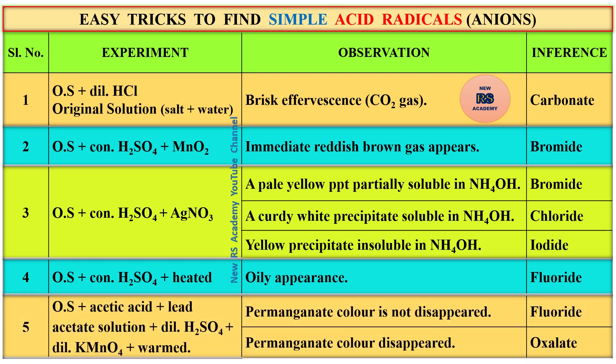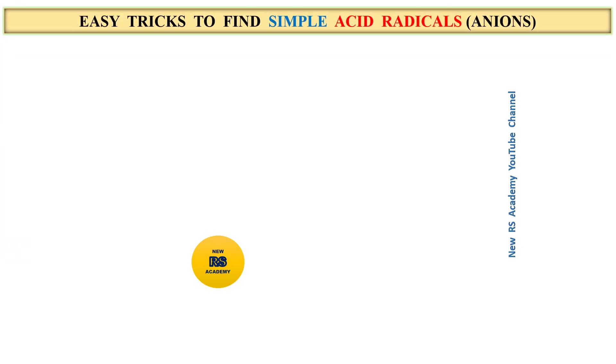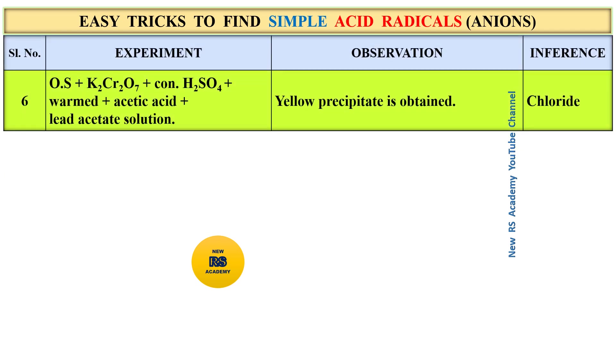The fifth test: original solution plus acetic acid plus lead acetate solution plus dilute potassium permanganate (KMnO4), then warm. If the potassium permanganate color does not disappear, that is fluoride. If the potassium permanganate color disappears, that is oxalate. A yellow precipitate with lead acetate solution indicates chloride.